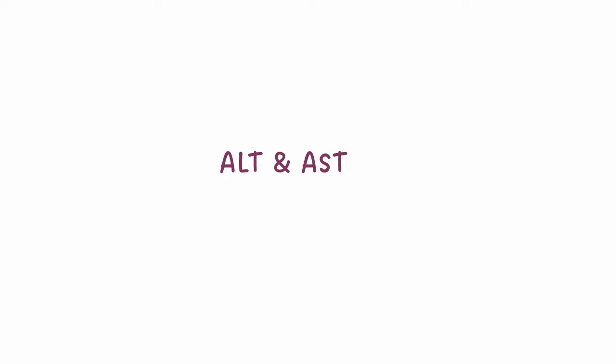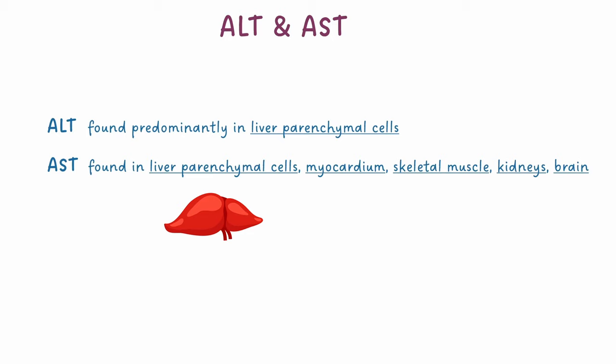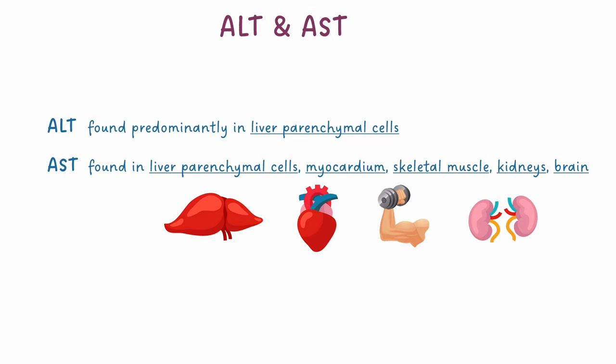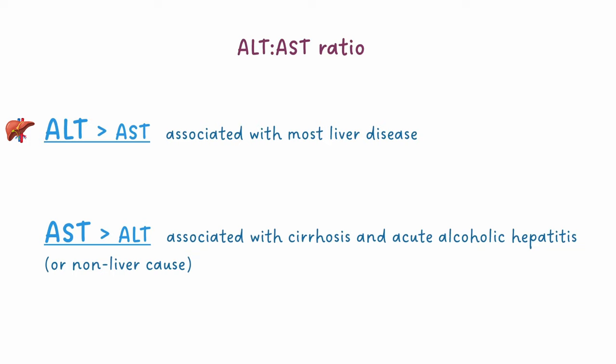ALT is found predominantly in the liver parenchymal cells, and so is released into the blood when these cells are damaged. AST is also found in liver parenchymal cells, but additionally is present in heart muscle, skeletal muscle, kidneys and the brain. This makes ALT a more specific test for determining liver damage. When interpreting ALT and AST, we can look at the ratio between them. An ALT greater than AST is associated with most liver disease, but AST greater than ALT can be associated with liver cirrhosis or acute alcoholic hepatitis.